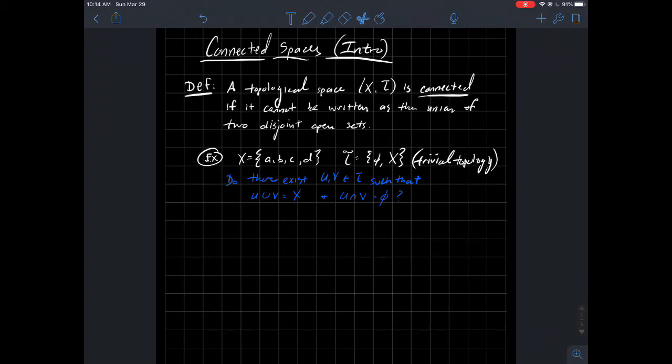Well, look at your topology T. There's only two choices for U and two choices for V. You either pick the empty set or the whole set itself. So therefore, no, it's not possible to separate X into two disjoint pieces. So X with the trivial topology is connected.